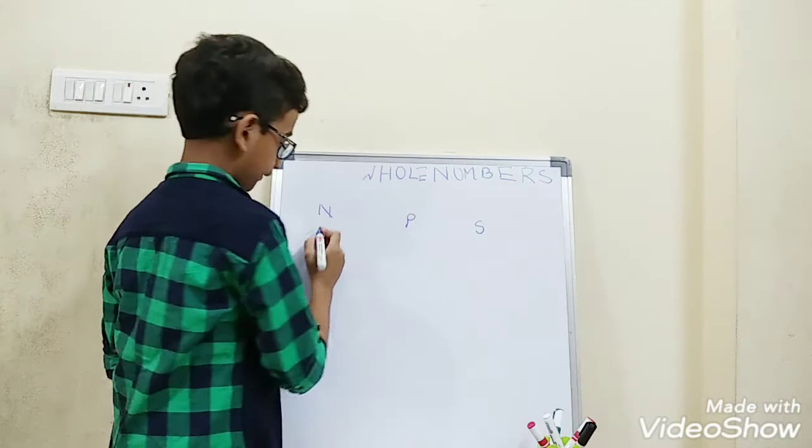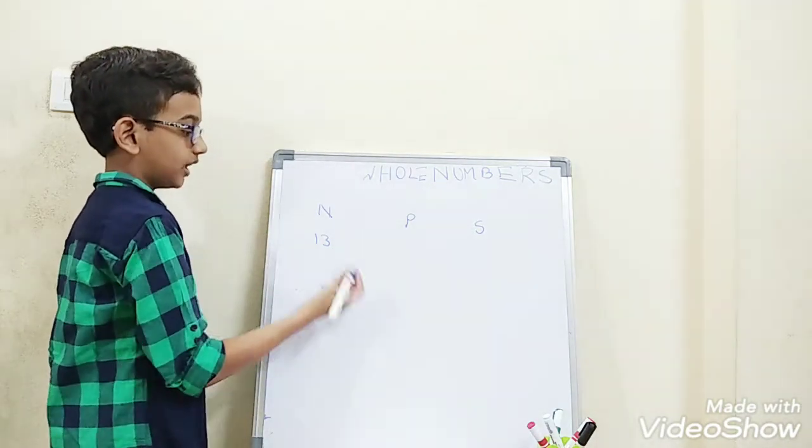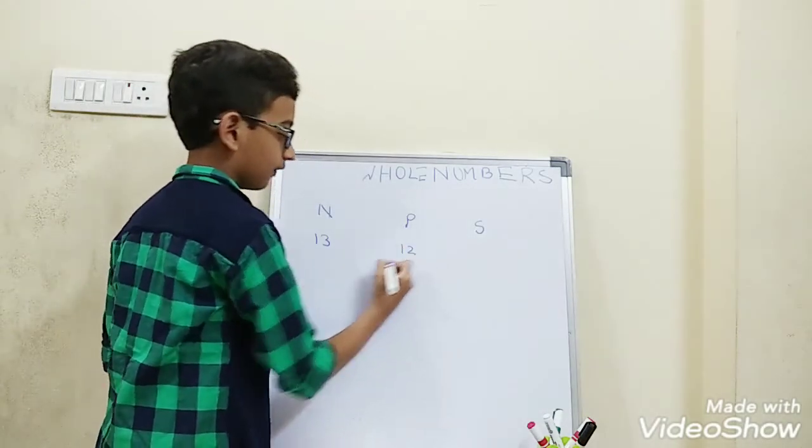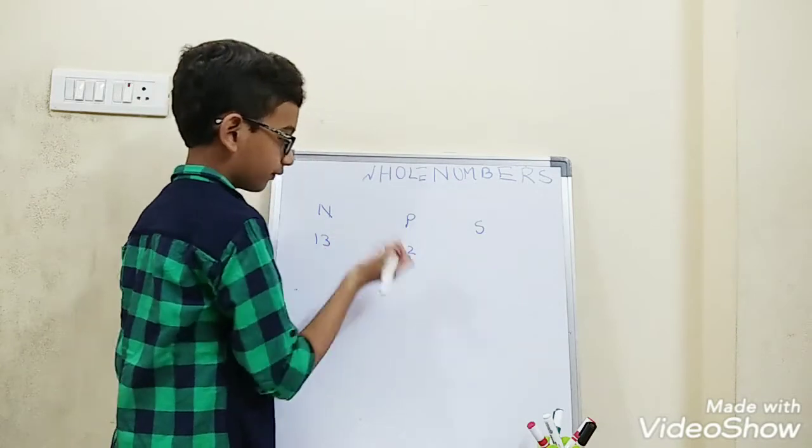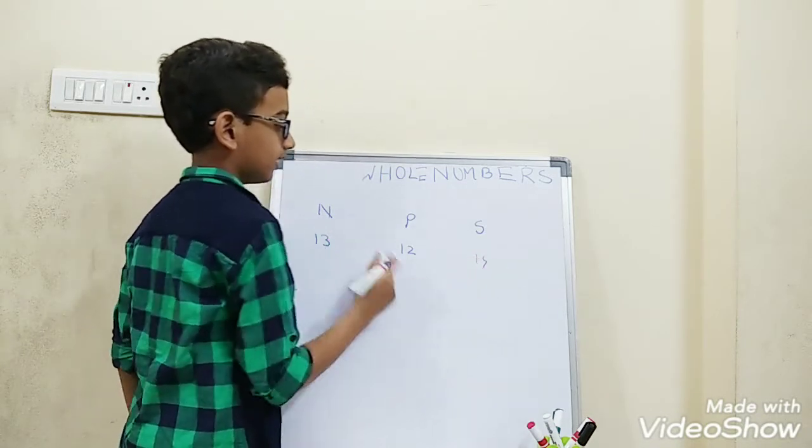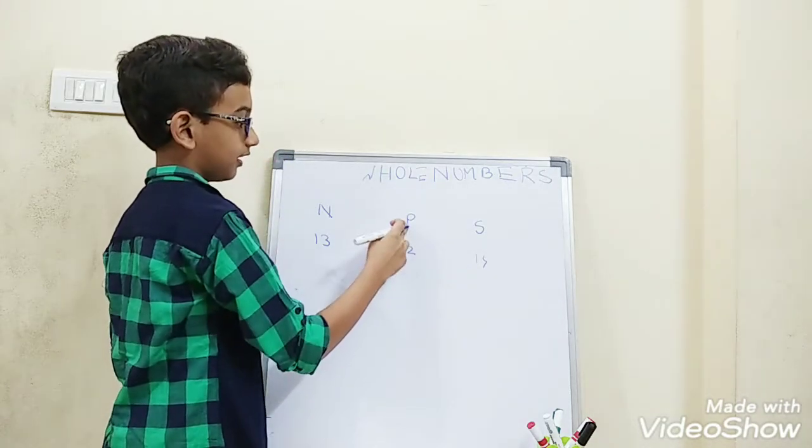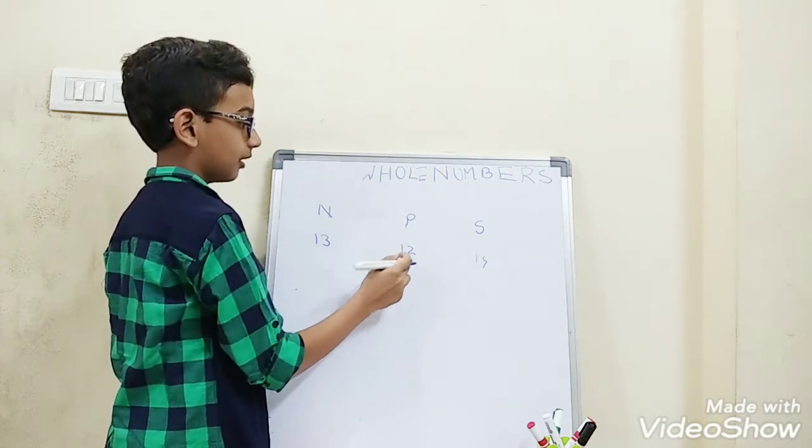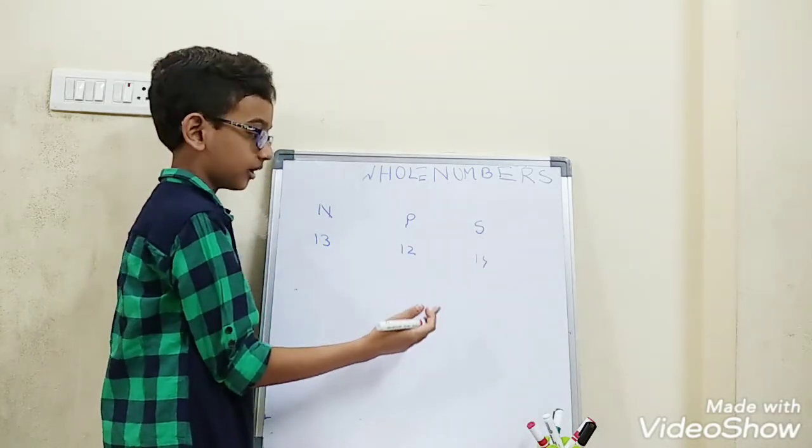Let's take the first number as 13. 13's predecessor is 12, and 13's successor is 14. This is the before number and this is the after number. Predecessor means the before number and successor means the after number.